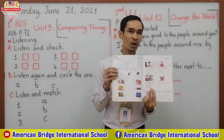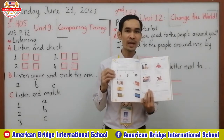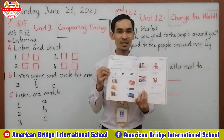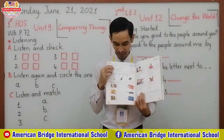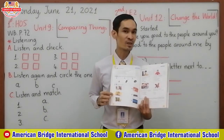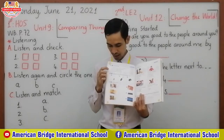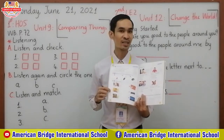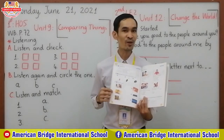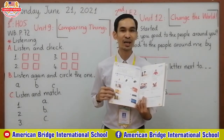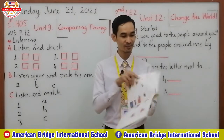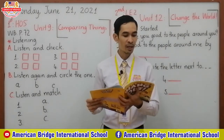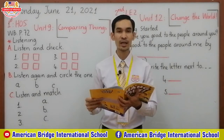So what do you see on page 72, everyone? On page 72, you see Listening. And there are three activities here: A, B, and C. Now I would like you to focus on part A with me all together. A — Listen and check.